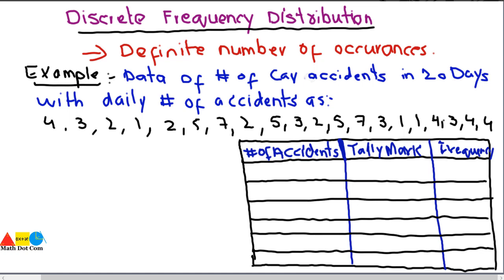The example involves the number of car accidents in 20 days, with the daily number of car accidents given as the data. On one day the number of accidents was 4, the next day 3, then 2, then 1, then 2, then 5 — these are the number of accidents on a daily basis for 20 days.